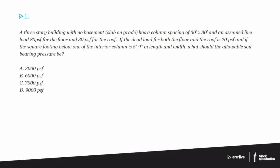All right, so our first question. We're only going to do a few of these, but we're going to start off with this one, which is a three-story building with no basement, slab on grade, has a column spacing of 30 by 30 and an assumed live load of 80 PSF for the floor and 30 PSF for the roof. If the dead load for both floor and roof is 20 PSF, and if the square footing below one of the interior columns is 5'9" in length and also in width, what should the allowable soil bearing pressure be?